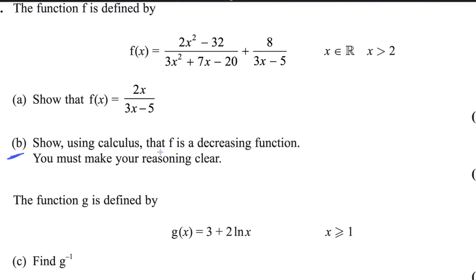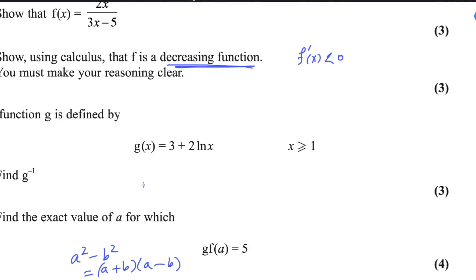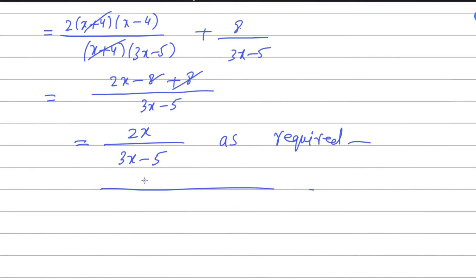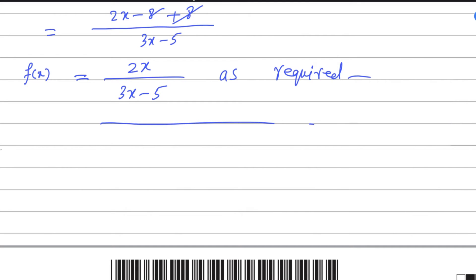Using calculus, show that f is a decreasing function. f is decreasing if the derivative of the function is less than 0 — that is the rule. If the derivative is greater than 0, the function is increasing. First, we need to differentiate this function using the quotient rule.